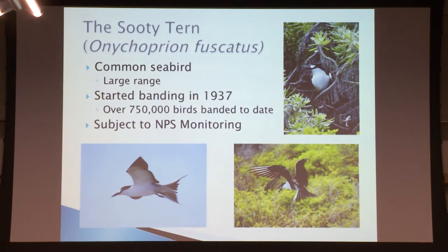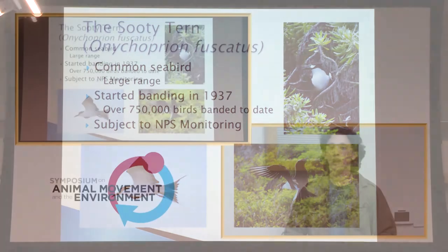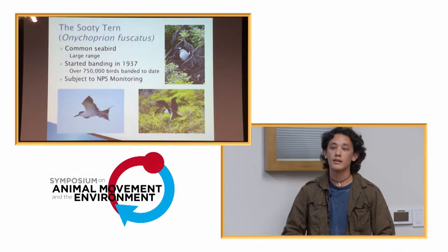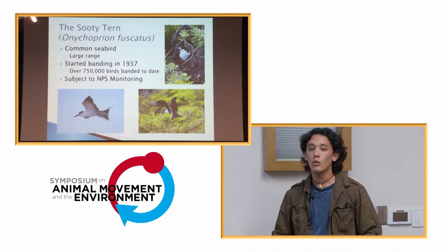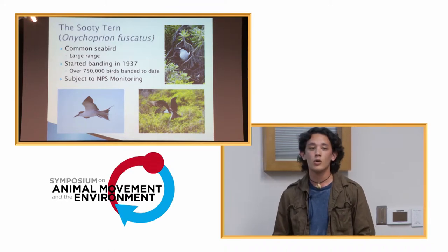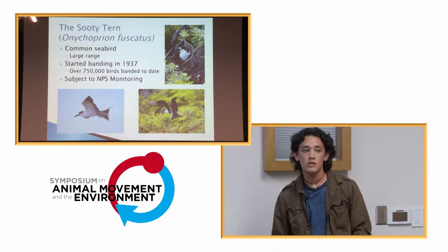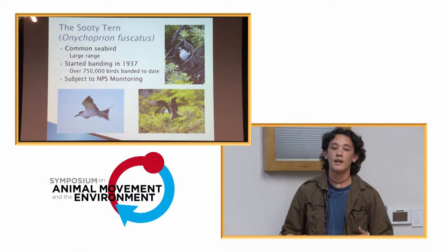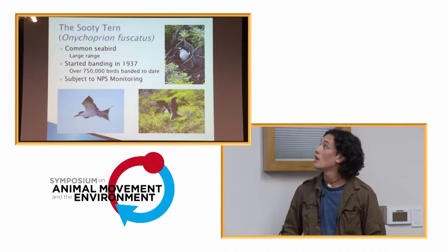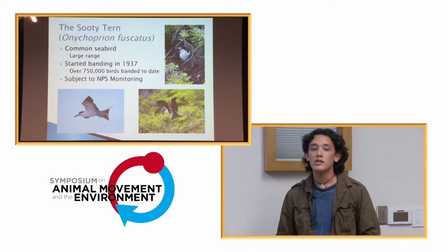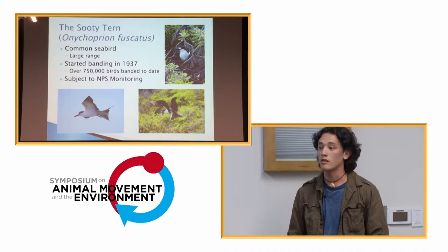The indicator species I want to talk about today is the sooty tern. These are a very common seabird found in both the Atlantic and Pacific Oceans, and they have a very large range. So if there's a threat to the ocean, these birds are going to be encountering it and it will be reflected in their population. The population I work with has banding records going back to the 1930s, and I've got over 750,000 individuals in my database — a really big dataset I can use to tease out population trends over time. This is also one of the species the National Park Service is interested in continuing to monitor.